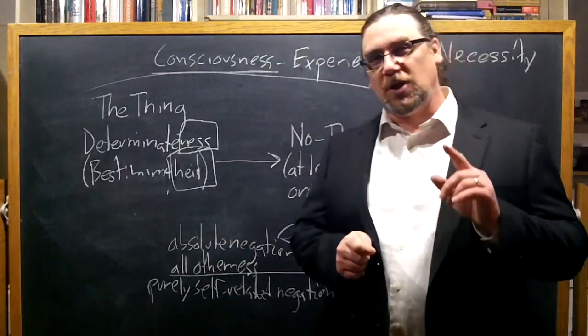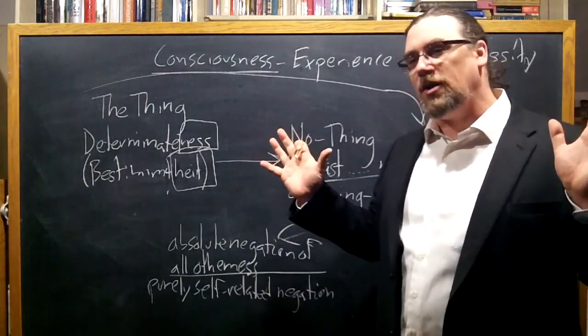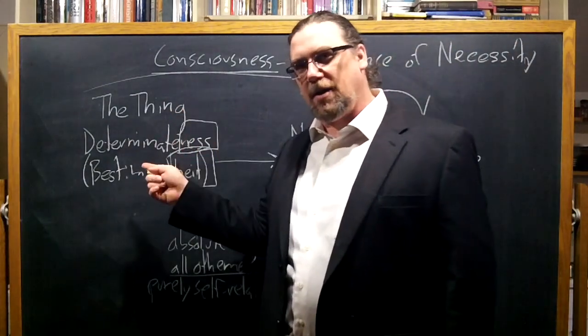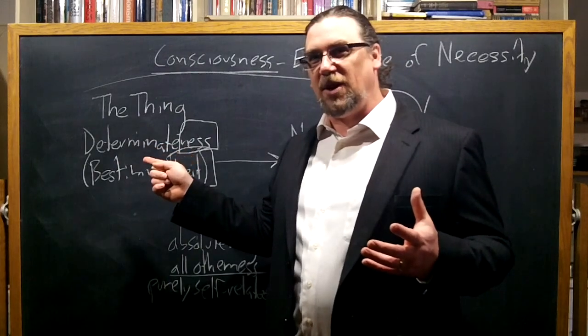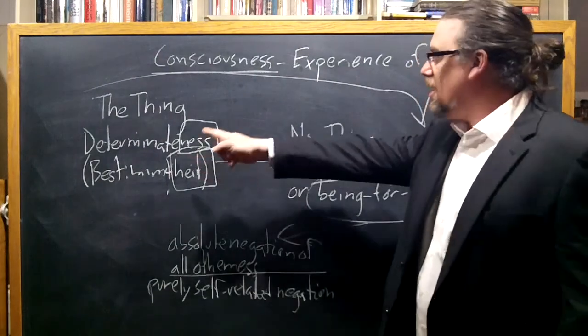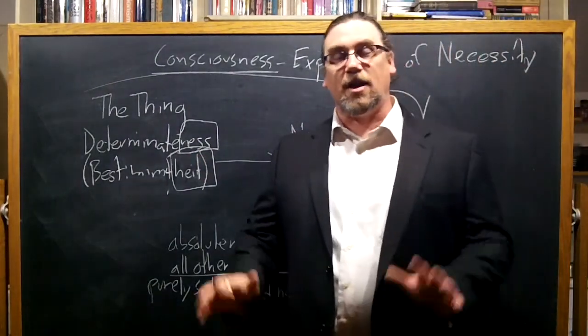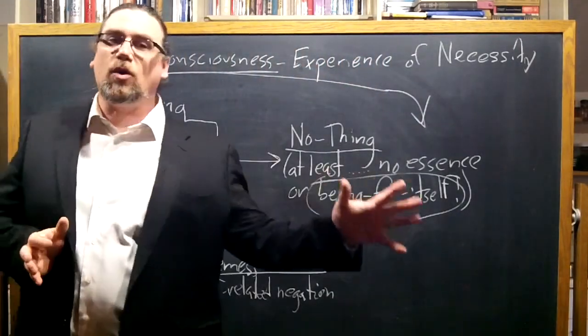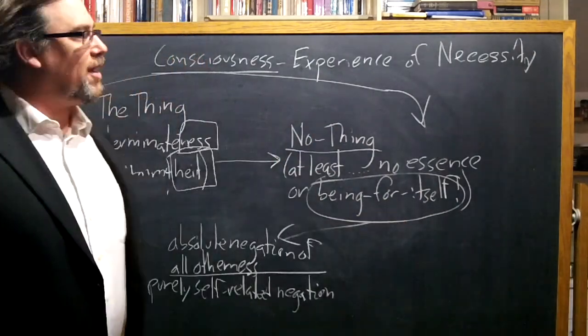So we don't want to be seduced too readily by language into thinking that, well, it's got determinateness, so that must be something. Because what's going to happen is the thing, by examining what it means for it to be determinate, as we've just done in the previous passages, is showing us to be no thing. Not a thing, at least in the sense of being something that can be totally independent of all of its relations with everything else.